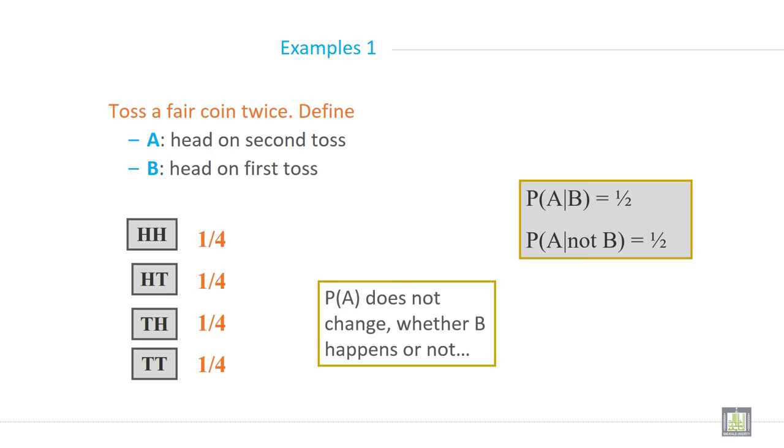In this case, probability of A given B is 1/2, and probability of A given not B is also 1/2. A and B are independent events because B and A do not affect each other.